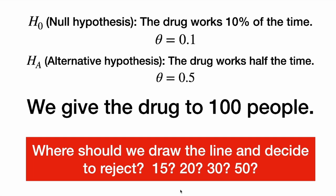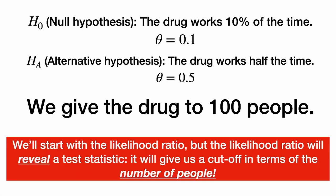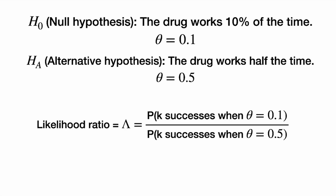Should the line be 15, 20, 30, or 50? It's not exactly clear. What we're going to do is set the type 1 error rate and find out. Let's figure out the cutoff point that guarantees we will only reject the null 5% of the time when it's really true. We'll start with the likelihood ratio. We're going to do a likelihood ratio test, but we'll find that the likelihood ratio will actually reveal the test statistic — it will give us a cutoff in terms of the number of people.